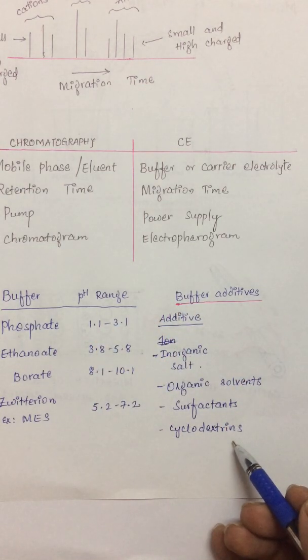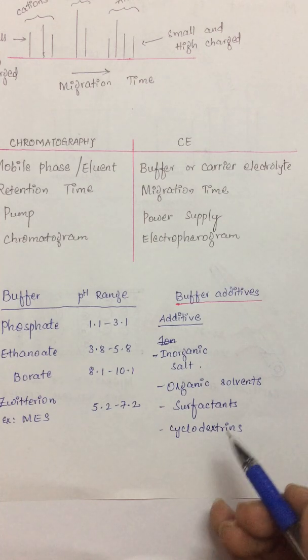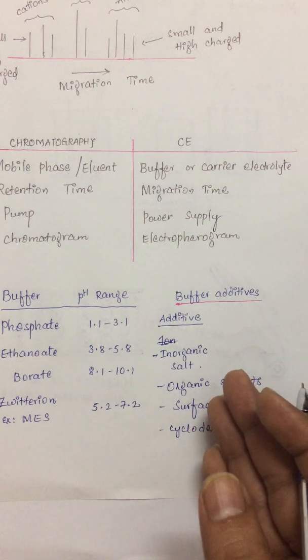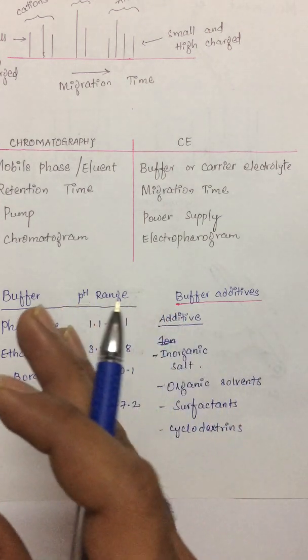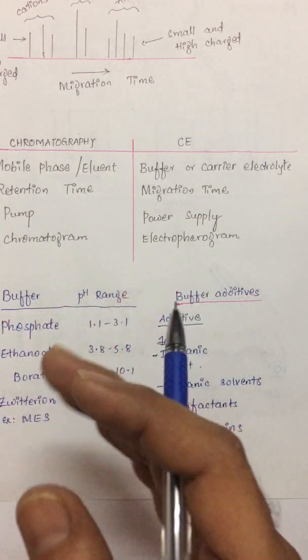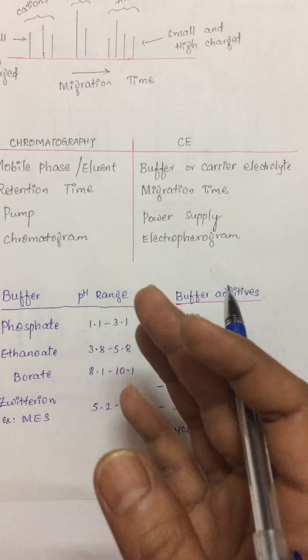Coming to the cyclodextrins, they provide chiral selectivity. So these are about the buffer additives. How exactly the components of the analyte move towards the cathode, how they get separated, what is electro-osmotic flow, all these things we will be discussing in our next video.